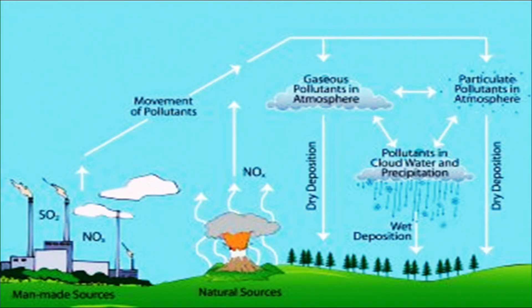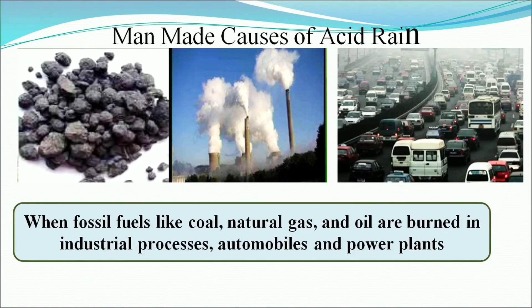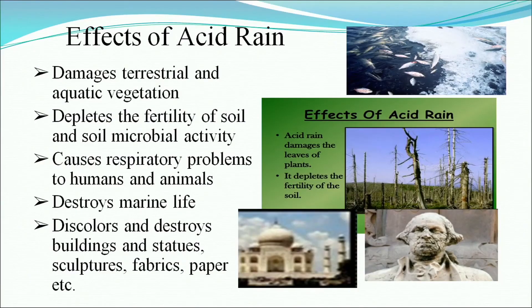These gaseous and particulate pollutants build up in the atmosphere and may drop to the Earth's surface as dry deposition or, if they come along with cloud water precipitation, as wet deposition. Natural sources include volcanoes and lightning. Man-made causes include burning of fossil fuels like coal, natural gas, and oil in industrial processes, automobiles, and power plants. Effects of acid rain: they damage terrestrial and aquatic vegetation, deplete soil fertility and soil microbe activity, cause respiratory problems, destroy marine life, and discolor or destroy buildings and statues.